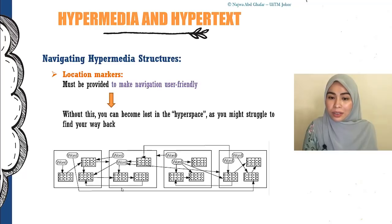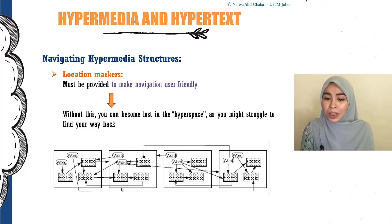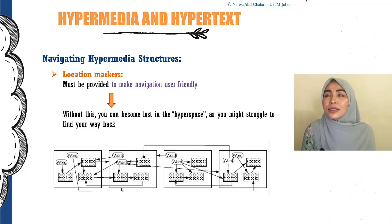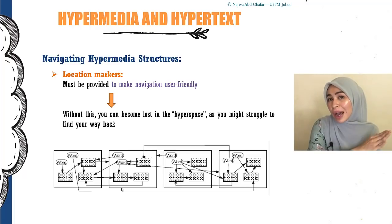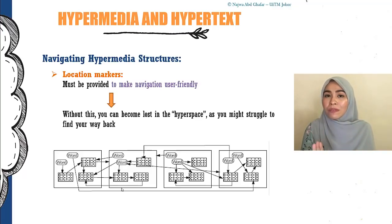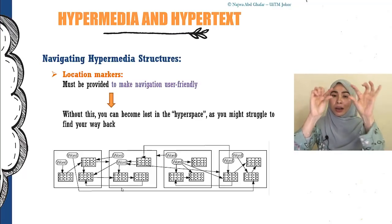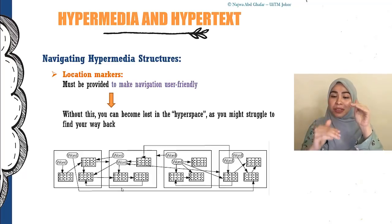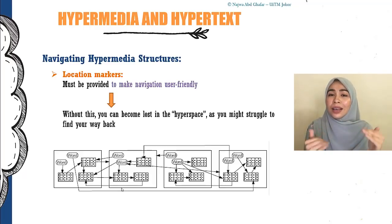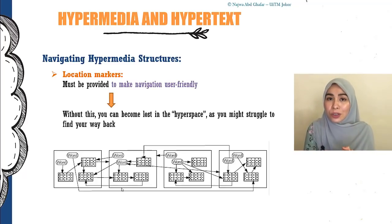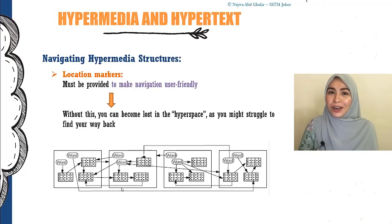Lastly, location markers. Location markers must be provided to make navigation user-friendly. Without them, you can become lost in the hyperspace as you might struggle to find your way back. Location markers show users where they can go and how they can go back. An example of this is breadcrumbs — providing markers showing where the user is right now inside the website, making it easier to navigate from one page to another. That is the end of this chapter.